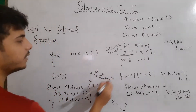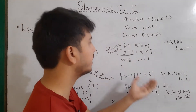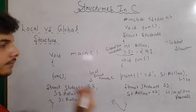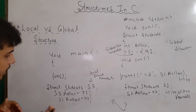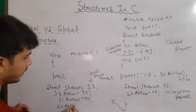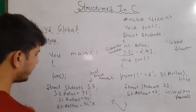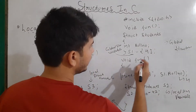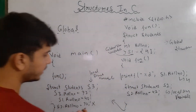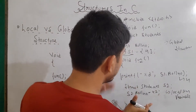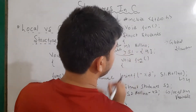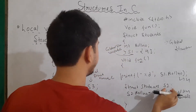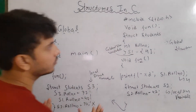A local structure variable means that a variable defined in the function definition cannot be accessed by another function, unless we are passing it through — which we will see in the next section. So I cannot write here s2 dot roll number equals to 72; this will give an error. Because the scope of our s2 variable is defined in the function block, this variable s2 will only be accessed within its block — within the function body. Remember that the variable of a global structure can be defined and declared in any function residing beneath it.